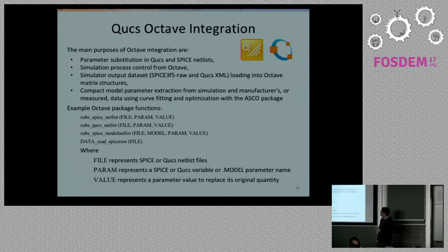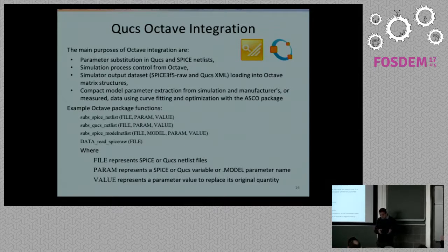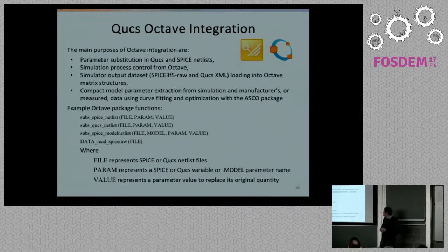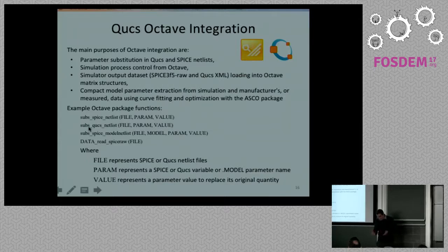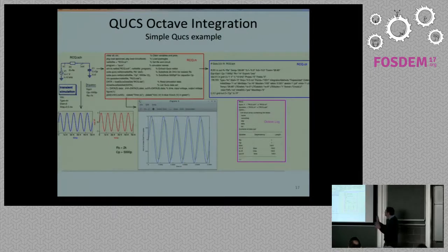To highlight the Octave side of Qucs for parameter extraction or fitting raw data to measurements — there are a few functions that can be used, mainly to do substitutions on netlists, either for the Qucs simulator or for SPICE. You can have full control of the engines from Octave, read back the data, and manipulate data inside Octave. You can start from either measurement data or parameters published by manufacturers. Some signature functions cover producing netlists, modifying SPICE model cards, and reading data back into the environment.